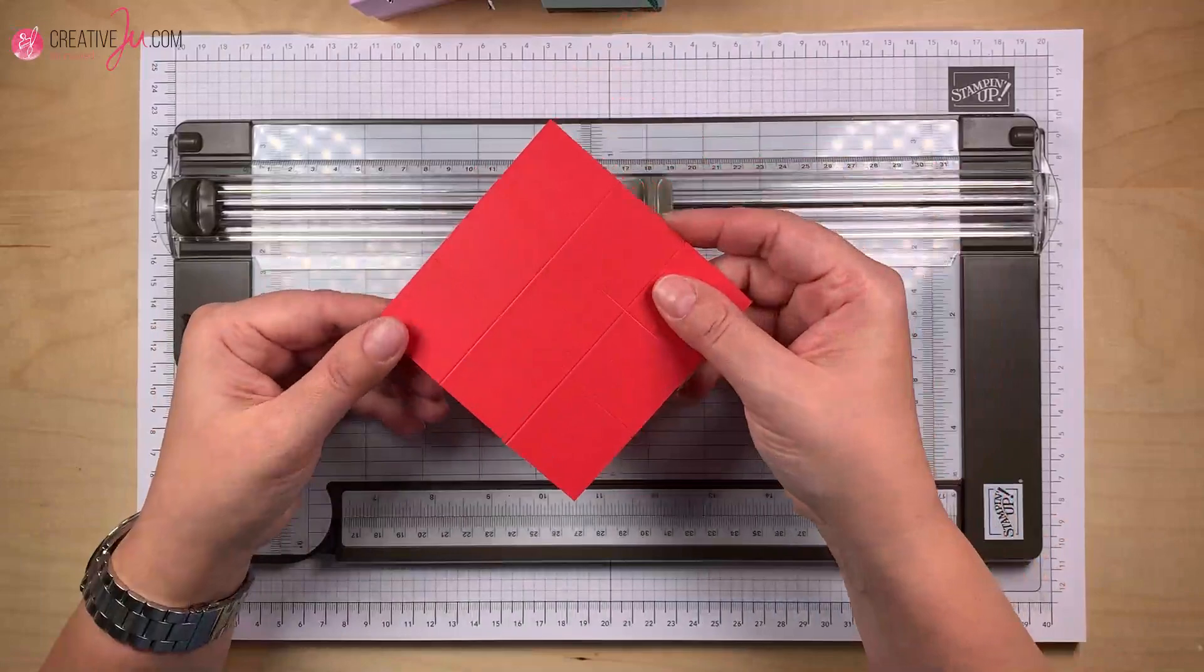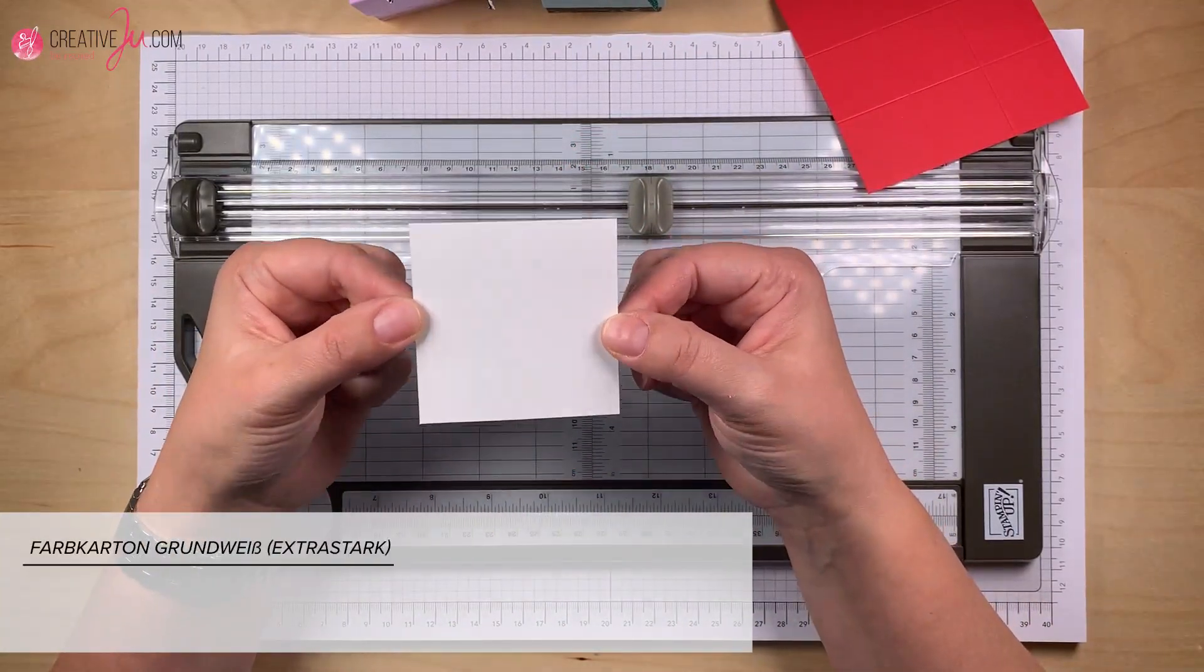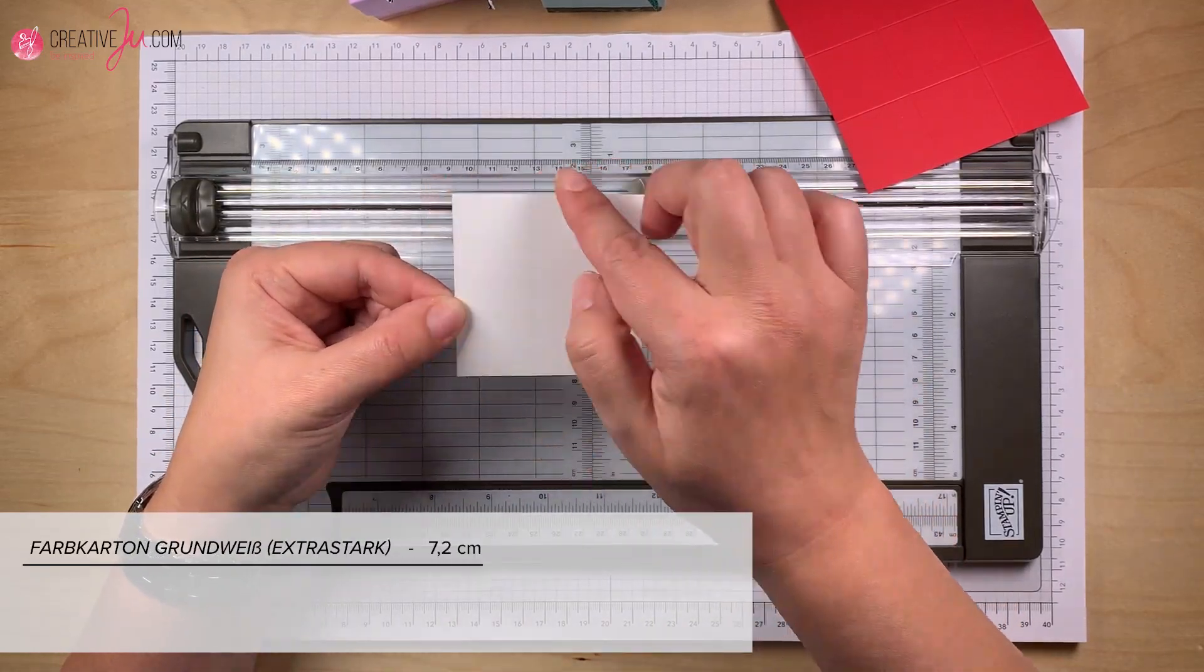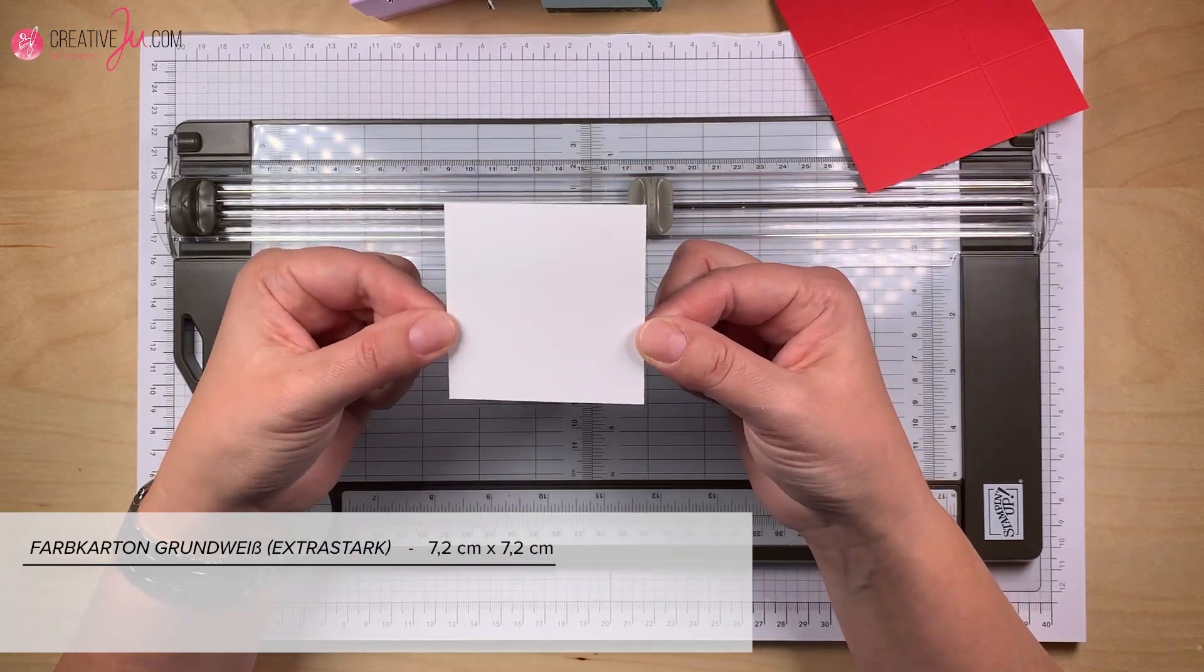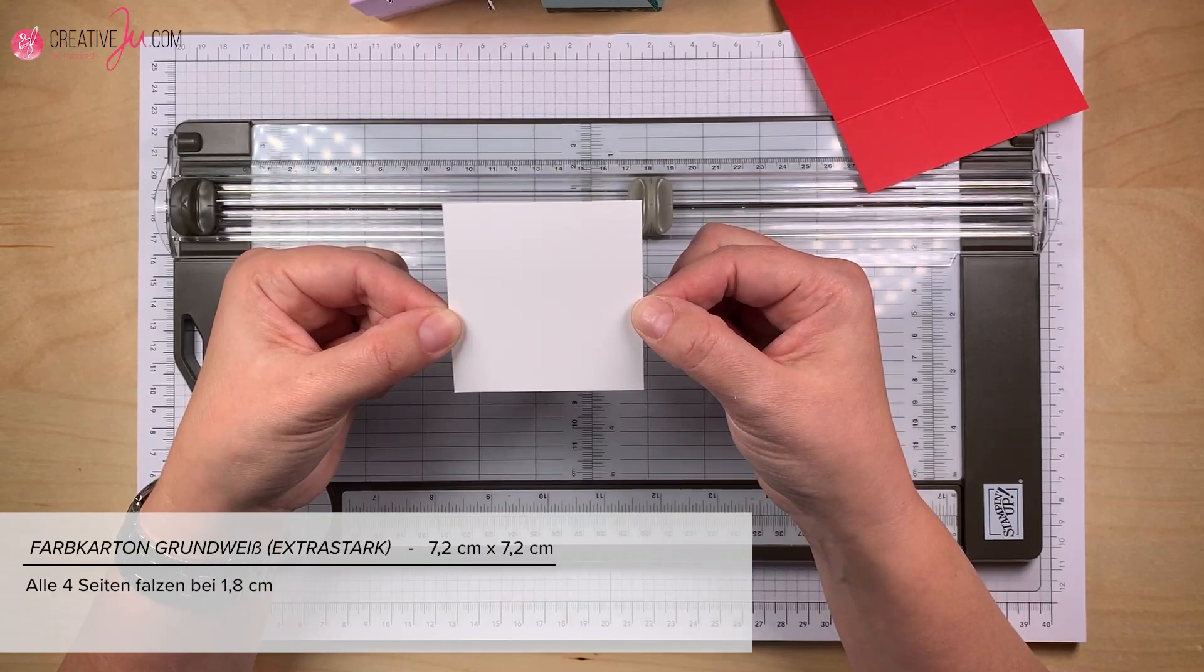Legen wir kurz zur Seite und gehen direkt zu dem Deckel über. Hier habe ich ein Stück Grund-Weiß extra stark, damit das einfach stabil ist. Hier brauchen wir das Maß 7,2 x 7,2 cm. Und dieses Stück falzen wir ebenfalls auf allen vier Seiten bei 1,8 cm.